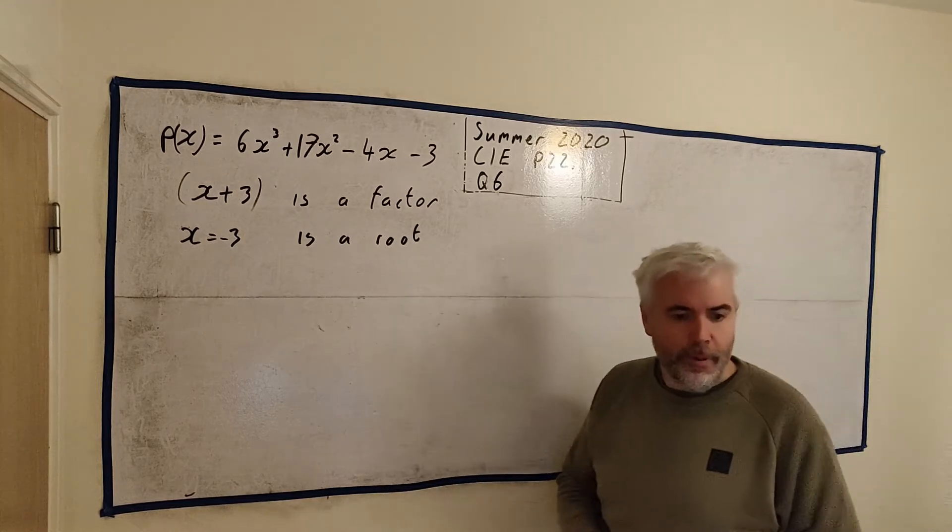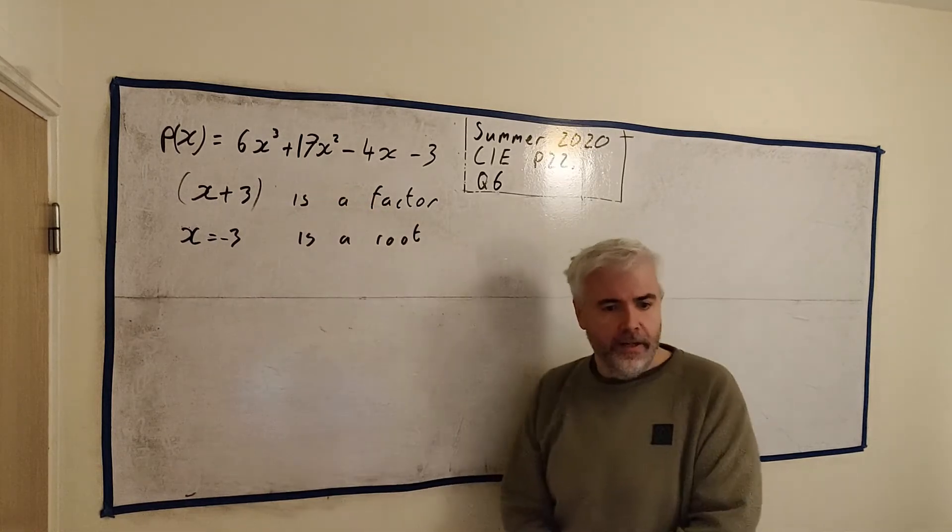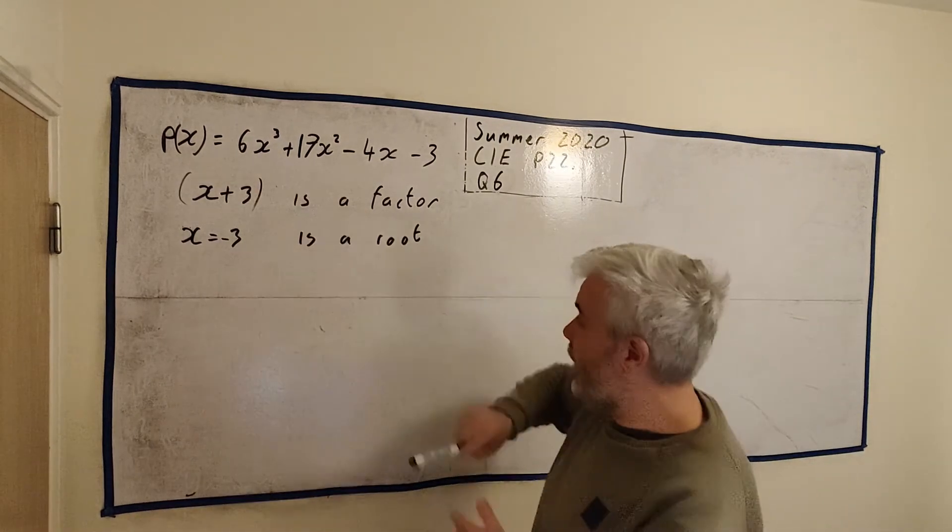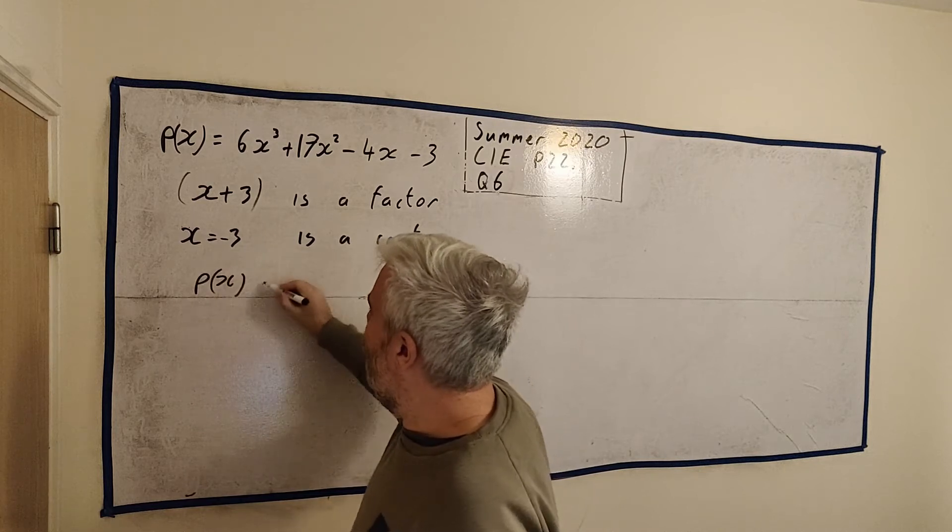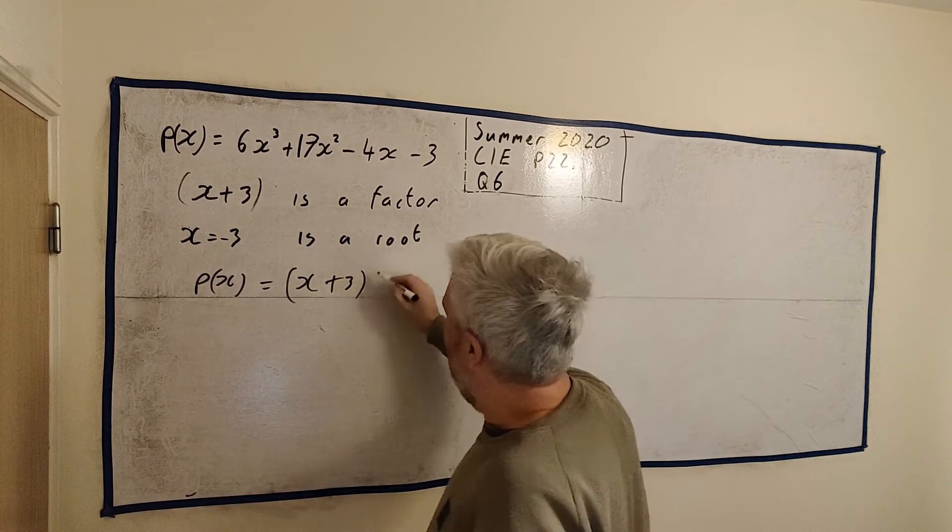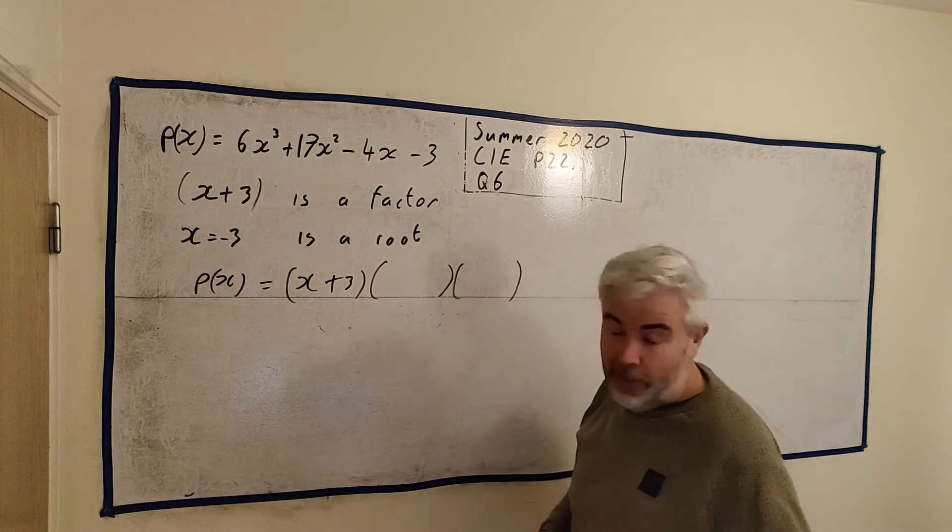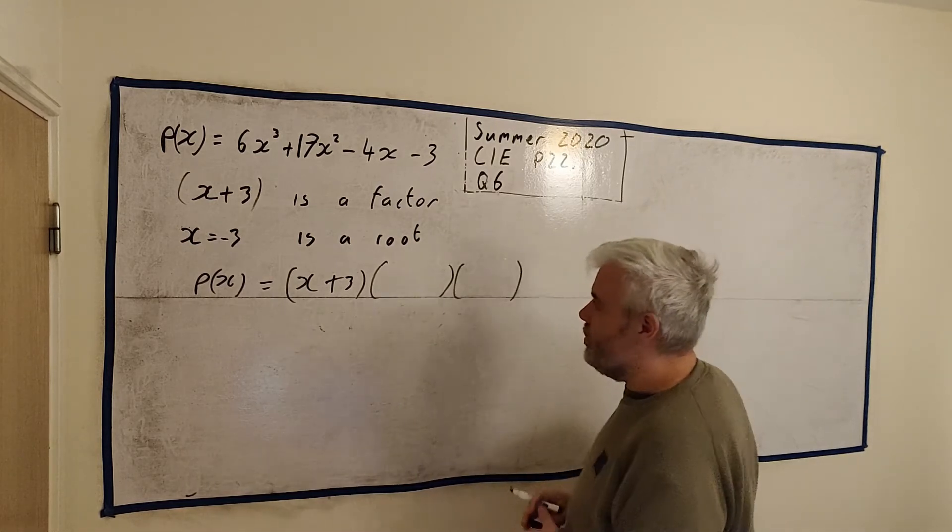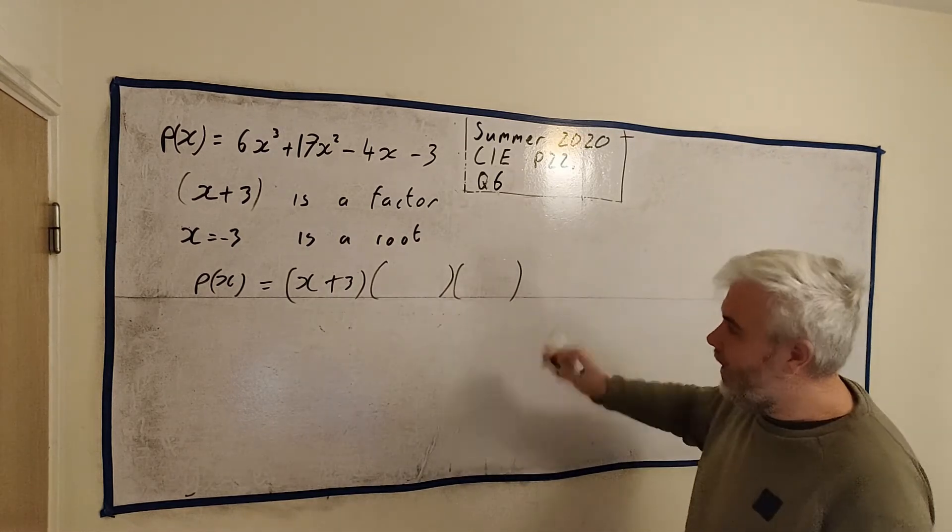That brings us on to part b, where they ask us to use this value of a. So I've replaced a with 17 here, and factorize this completely. So that means we have p here is equal to this. They want to break px up into one of them will be x plus 3, and then 1 or 2 brackets here. I'm guessing 2 brackets because they say completely, factorize it completely.